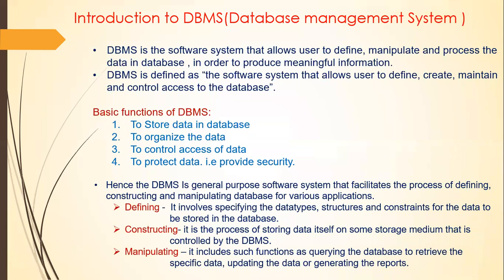We can store different types of related information into a single table. The combination or collection of different interrelated information into different tables — and all these tables together — is what we consider the database. We can organize the particular data, which is the main function of the database management system.